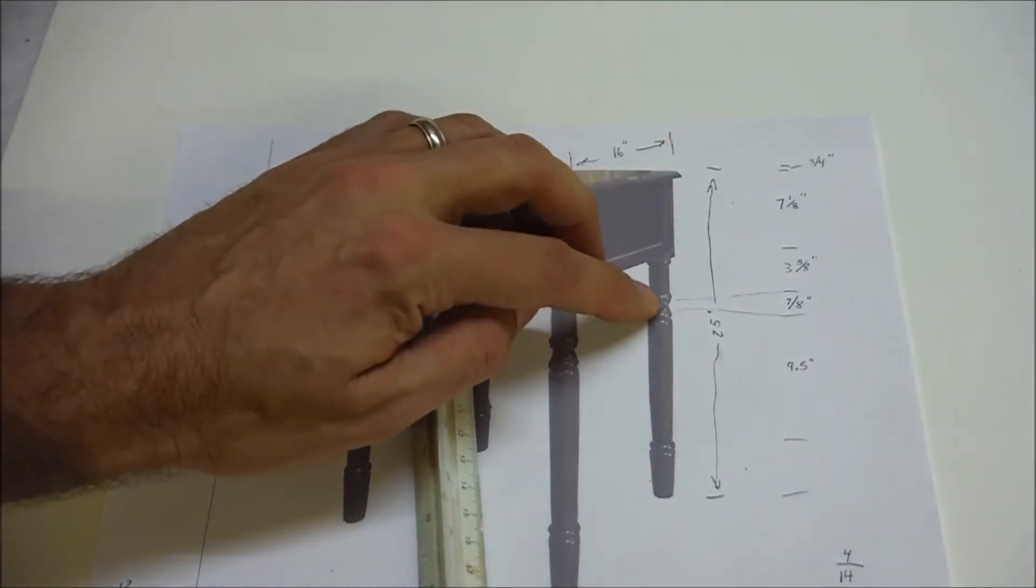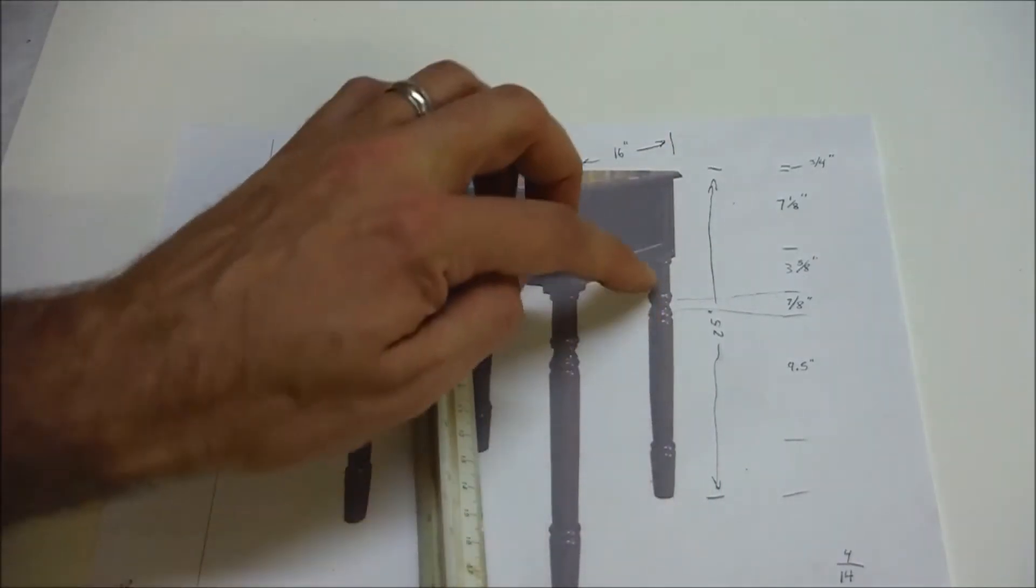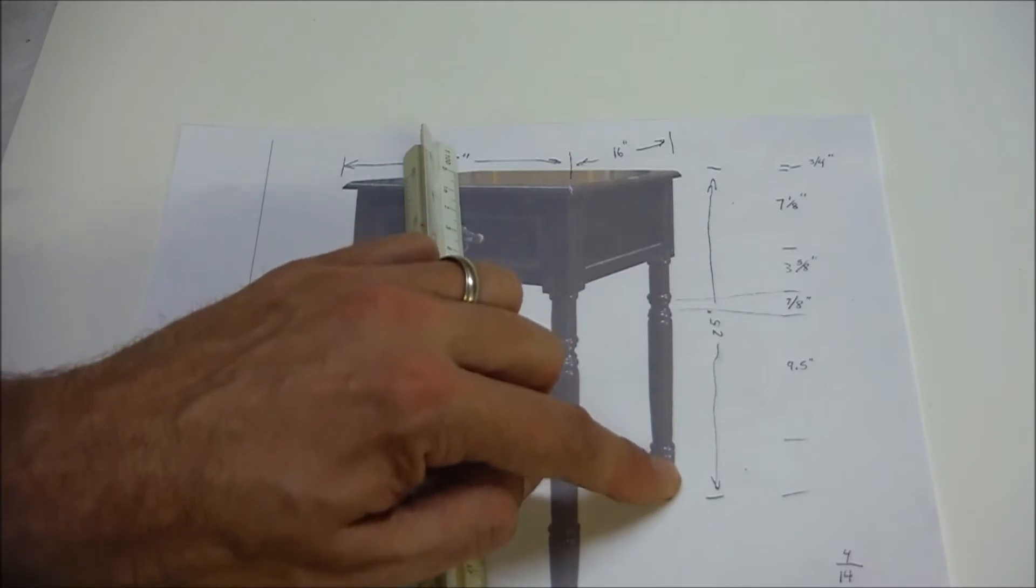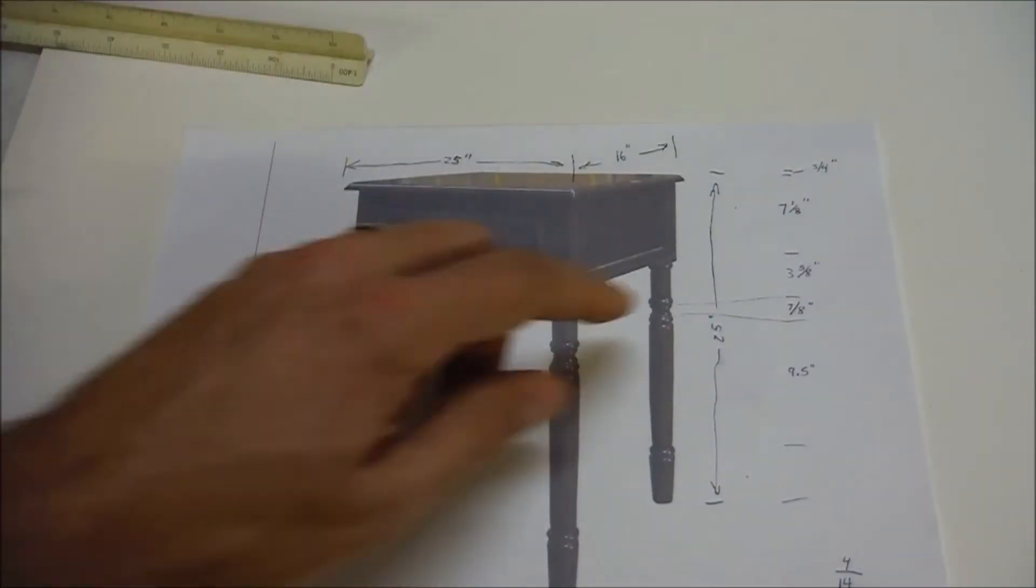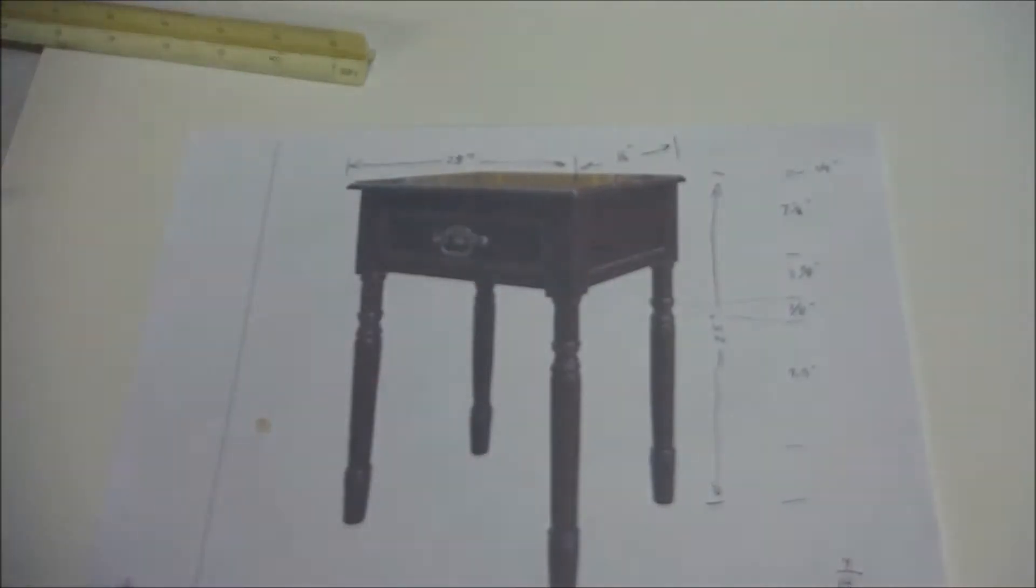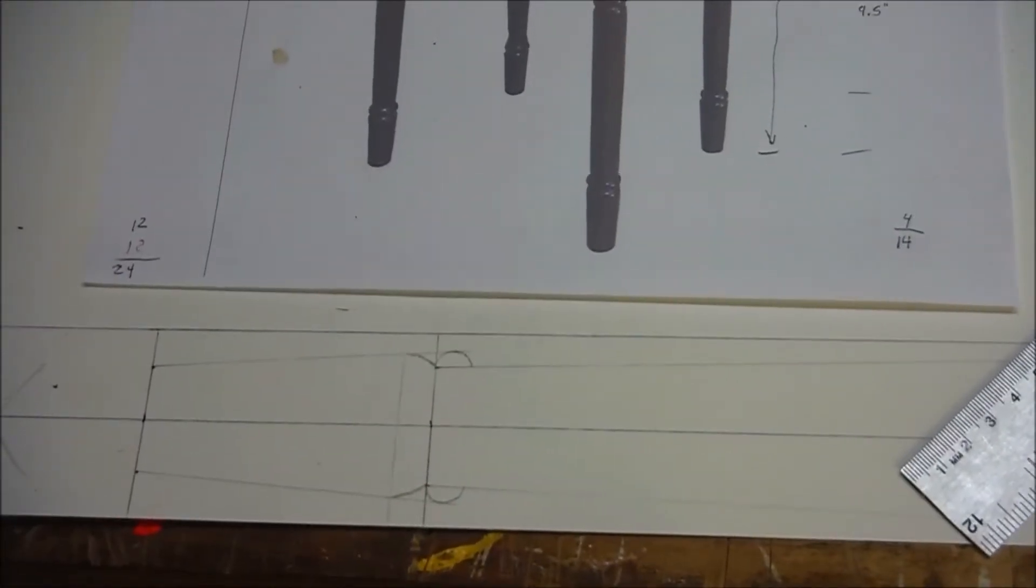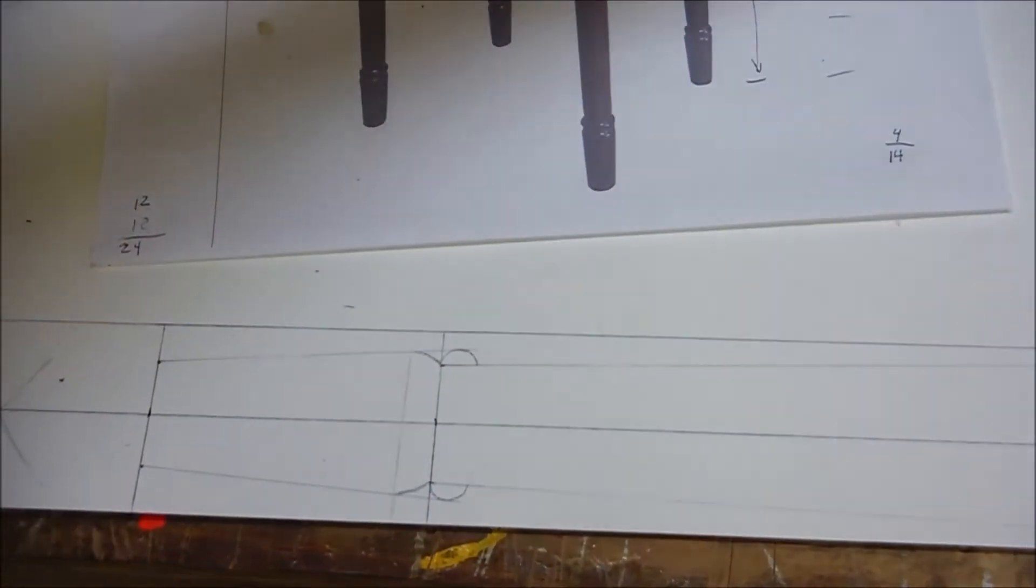And then you mark off every transition along the leg and scale it similarly. So from all this scaling, I got these dimensions and I was able to make a mock-up, a blank of the leg on poster board.